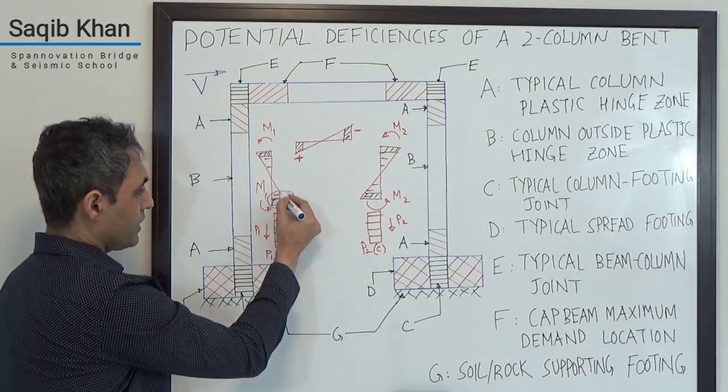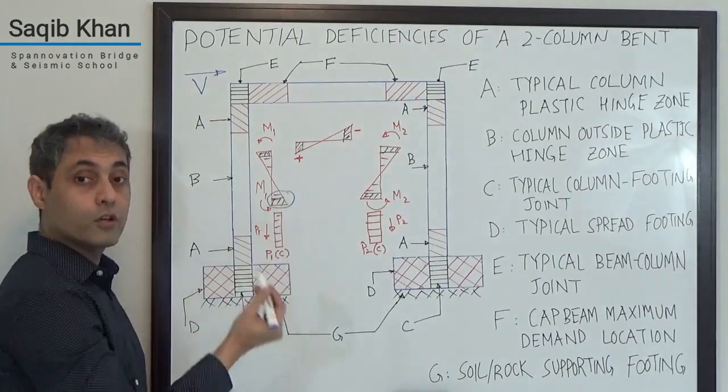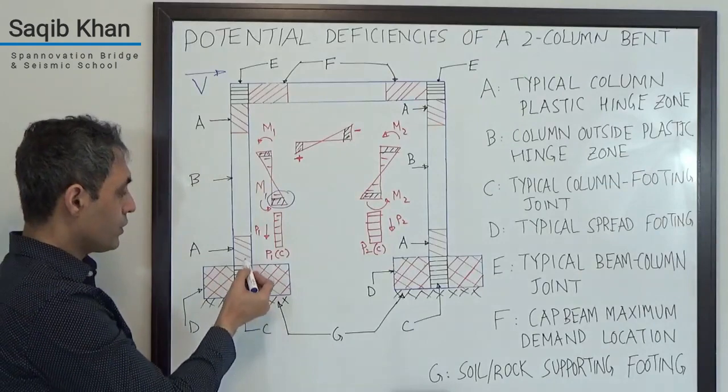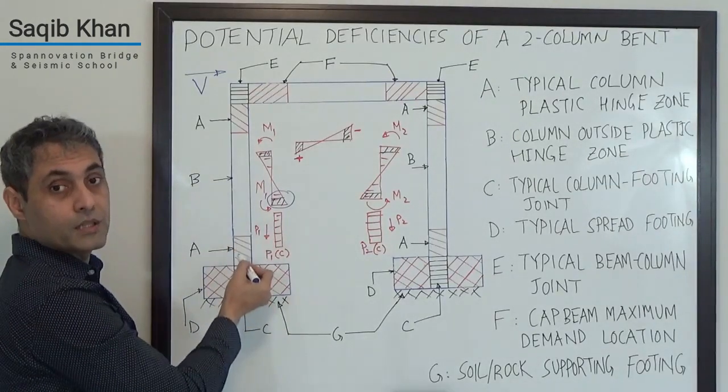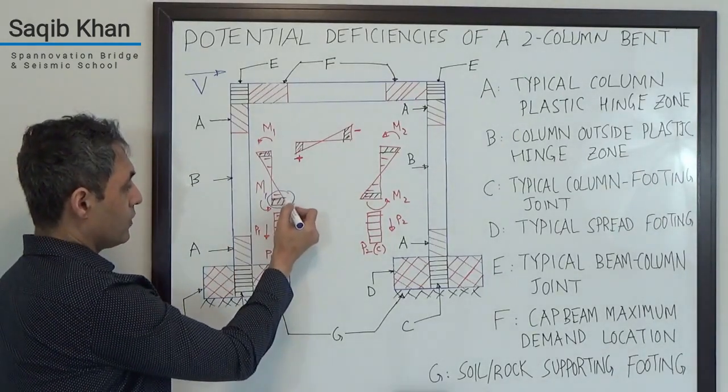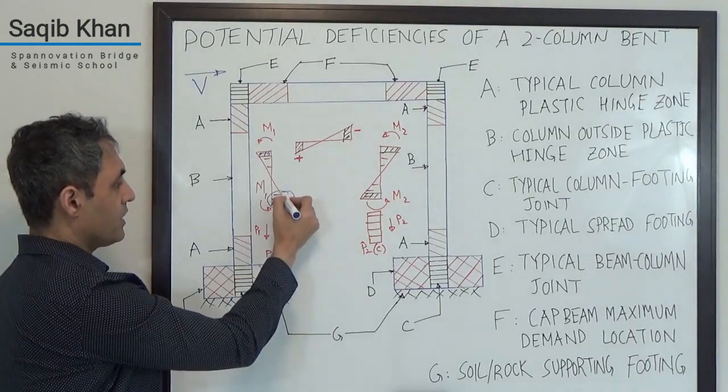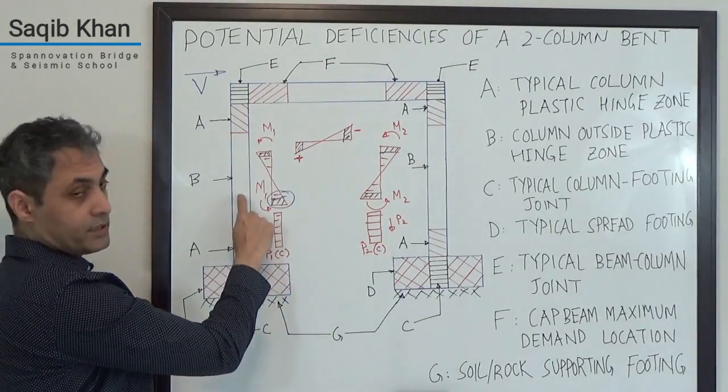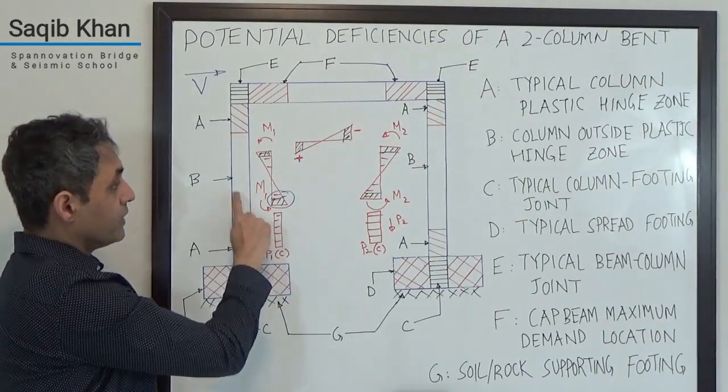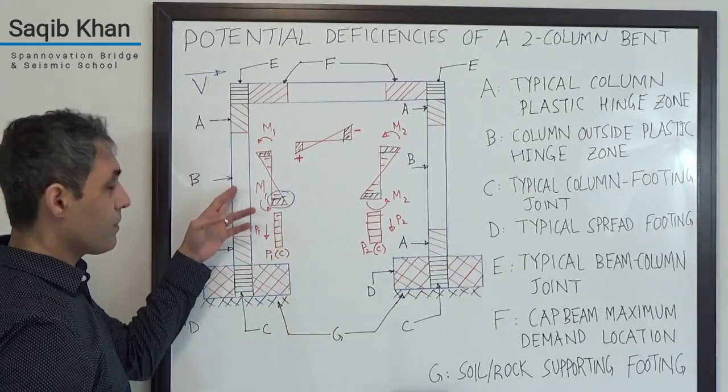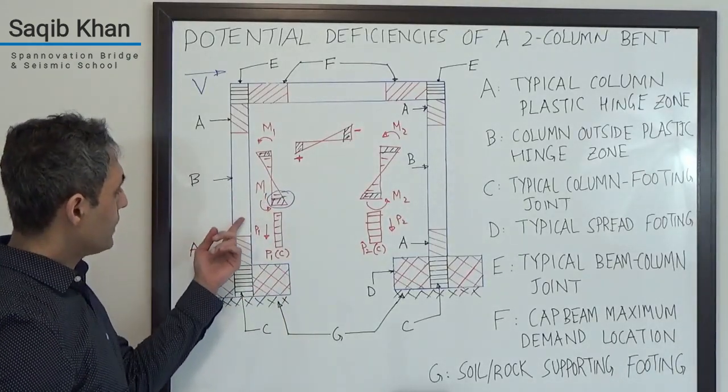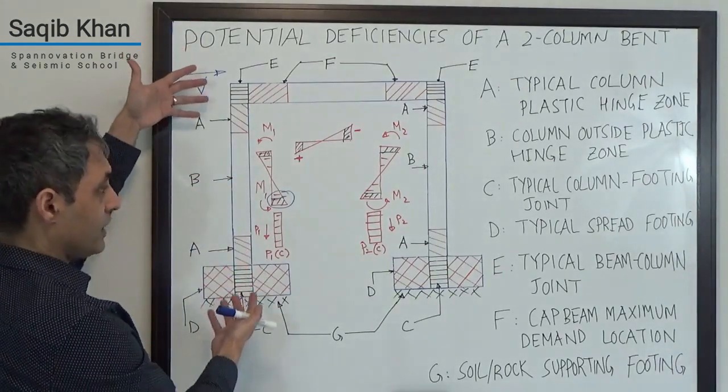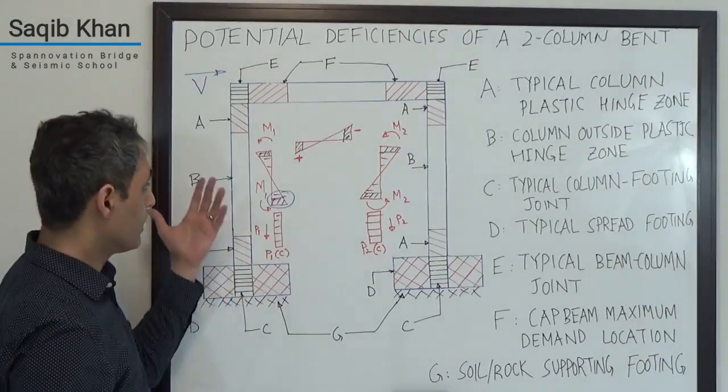But if you focus on this zone here, the demand outside of the plastic hinge zone is still pretty high or could be pretty high and there is a pretty high gradient here. So you do not want to curtail your reinforcement too early because in that case you won't form the hinge within the plastic hinge zone but actually higher than that. In all probability, you will not have detailed this to deal with any kind of plastic hinging. So that's very important to be mindful of that. We also want to make sure that we have enough shear reinforcement through here as compared to the overstrength shear that's going to be generated within the column.